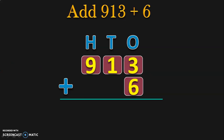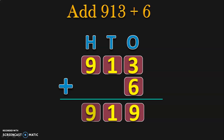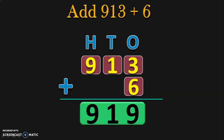Begin the addition from the 1s place: 3 plus 6 gives you 9. Move on to the 10s place — there is no digit in the second number, so you can assume it to be 0, or simply write down the digit from the first number directly in the answer. In the 10s place, you will have 1. Move to the 100s place — again, no digit in the second number, so assume it to be 0 and write down the digit directly. So 913 plus 6 gives you the answer 919.